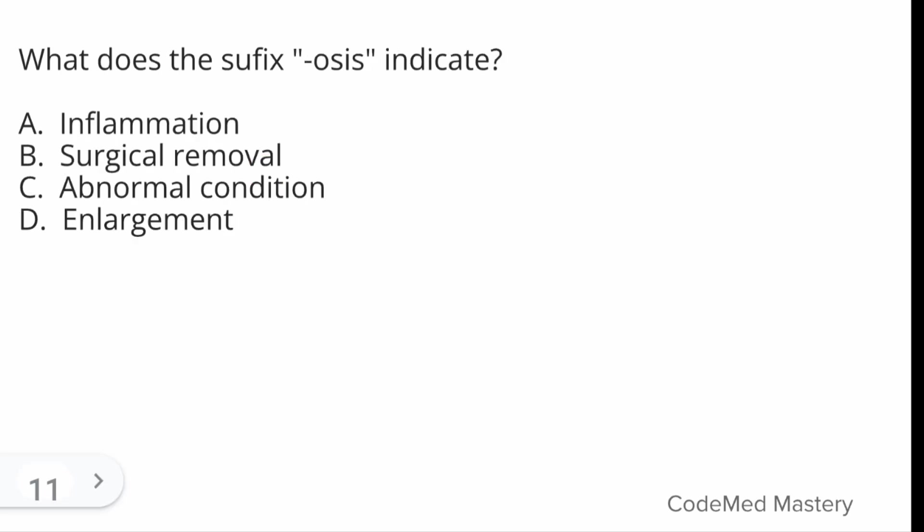Next question: what does the suffix -osis indicate? Option A: Inflammation, Option B: Surgical removal, Option C: Abnormal condition, Option D: Enlargement. The right answer is Option C: abnormal condition. -osis is used in medical terminology to indicate an abnormal condition, disease, or pathological state. The suffix for inflammation is -itis, for surgical removal is -ectomy, and for enlargement is -megaly. Please make a note of all this. That's it for today — thanks for watching, and good luck to everyone preparing for the CPC exam!